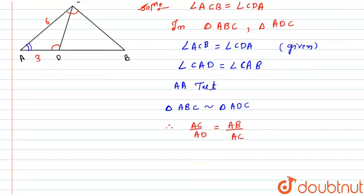Now AC is given to us 6 centimeters, AD is given to us 3 centimeters, AB we have to calculate and AC is given to us 6 centimeters.